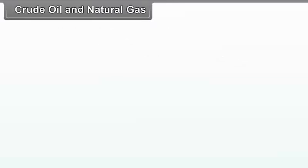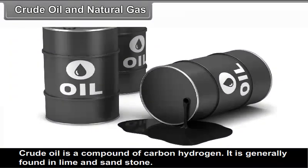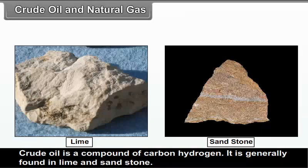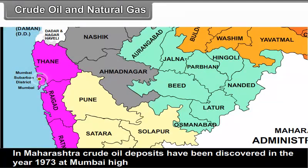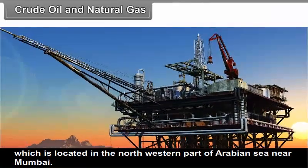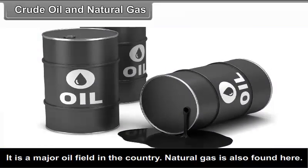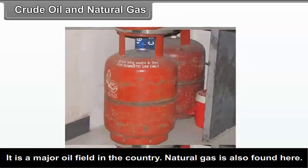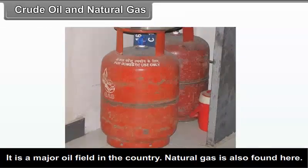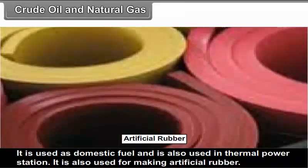Crude oil and natural gas: Crude oil is a compound of carbon and hydrogen. It is generally found in limestone and sandstone. In Maharashtra, crude oil deposits were discovered in 1973 at Mumbai High, which is located in the north-western part of the Arabian Sea near Mumbai. It is a major oil field in the country. Natural gas is also found here. It is used as domestic fuel, used in thermal power stations and also for making artificial rubber.